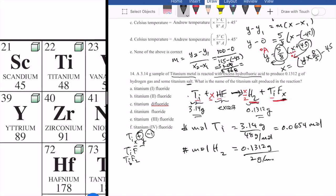If you do the same thing for hydrogen gas, 0.1312 grams over 2 (since there are 2H there), that's going to end up being 0.0656 moles.